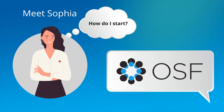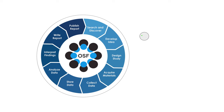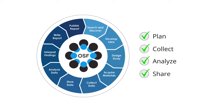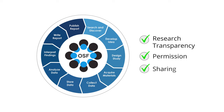Admittedly, Sophia was excited, but a bit nervous. Following open science guidelines feels like an intimidating undertaking, and she has many questions about where to begin. The OSF is an online platform that enables researchers to transparently plan, collect, analyze, and share their work throughout the entire research lifecycle. Each tool available on the OSF is specifically designed to promote the integrity of research while supporting researchers' individual comfort levels related to sharing and collaboration.